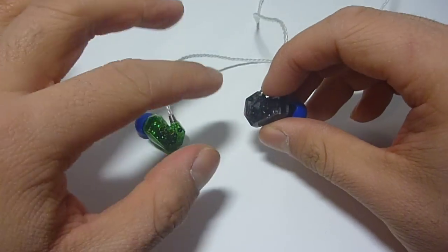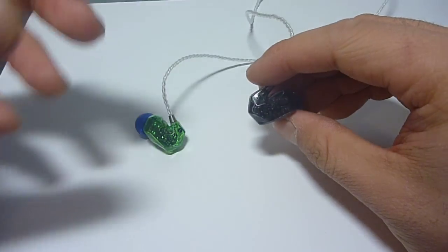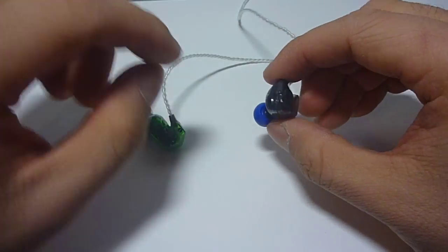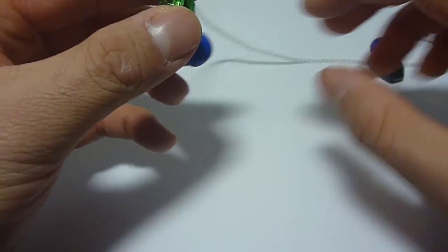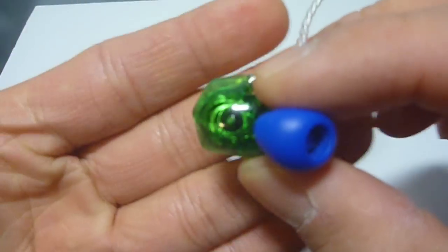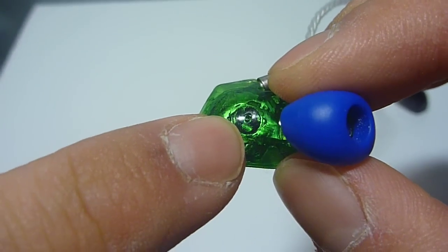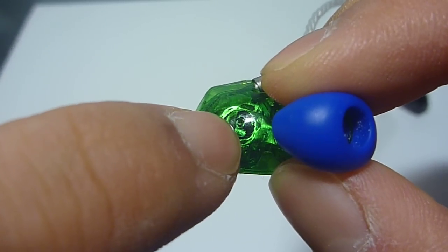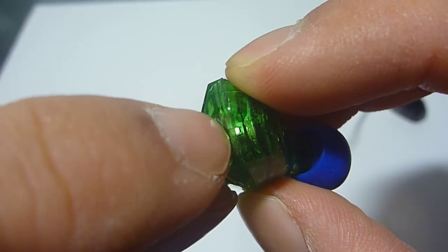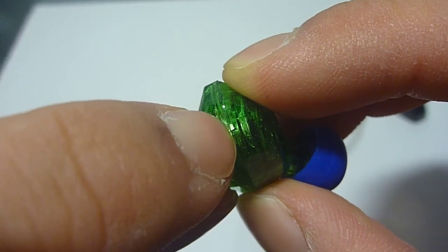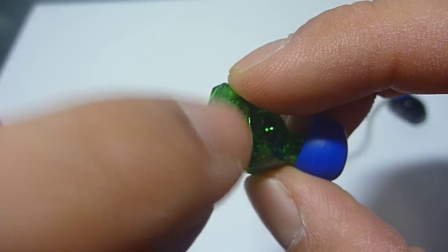Aside from the ear tips that you can adjust to fine-tune these earphones to your preferred sound signature, there are also vents on these earphones. On the green earpiece you can see here, there's a vent right here and another vent over here as well. This silver part actually highlights the dynamic driver inside.